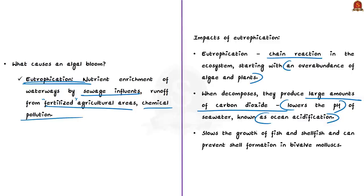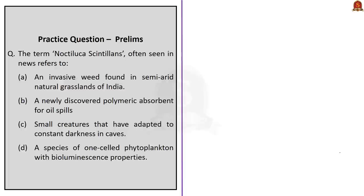Ocean acidification slows the growth of fish and shellfish and can prevent shell formation in bivalve mollusks, leading to reduced catch for commercial and recreational fisheries — meaning smaller harvests and more expensive seafood, affecting nutritional security as well. This concludes the analysis of this news article, which covered sea sparkle, Noctiluca scintillans, the causes of algal bloom, and the impacts of algal bloom and eutrophication.